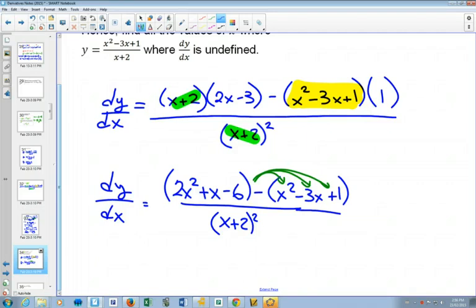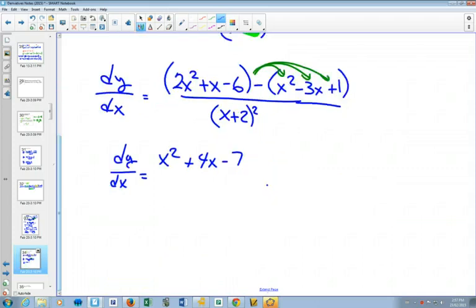If you know that subtracting this whole thing means all of those get subtracted, then we'd have 2x squared minus x squared will be x squared, x plus 3x give us plus 4x, and negative 6 minus 1 give us negative 7. And you've shown what you wanted to show.